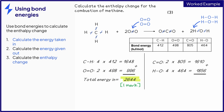We multiply the four by the bond energy given in the table to give 1,856. We add these values together to get the total amount of energy released when the new bonds are formed, which is 3,466 kilojoules per mole. Calculating this number will also score one mark.